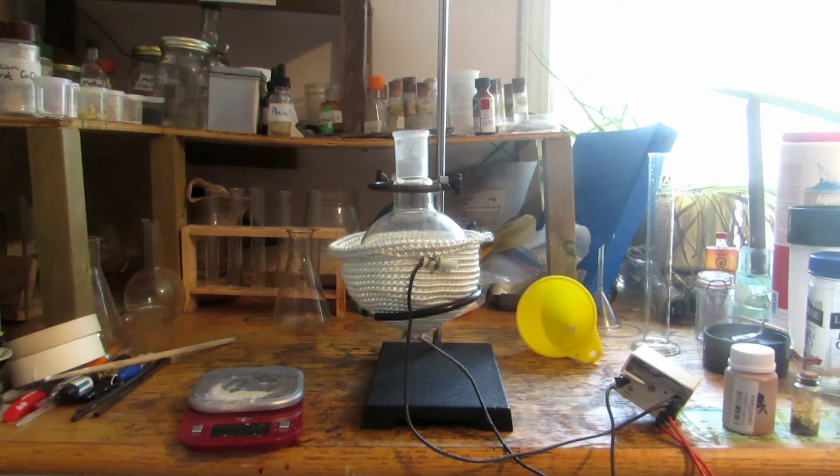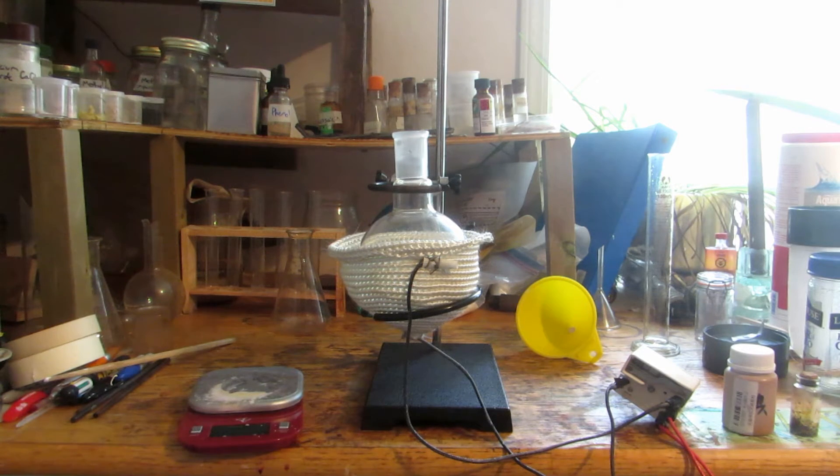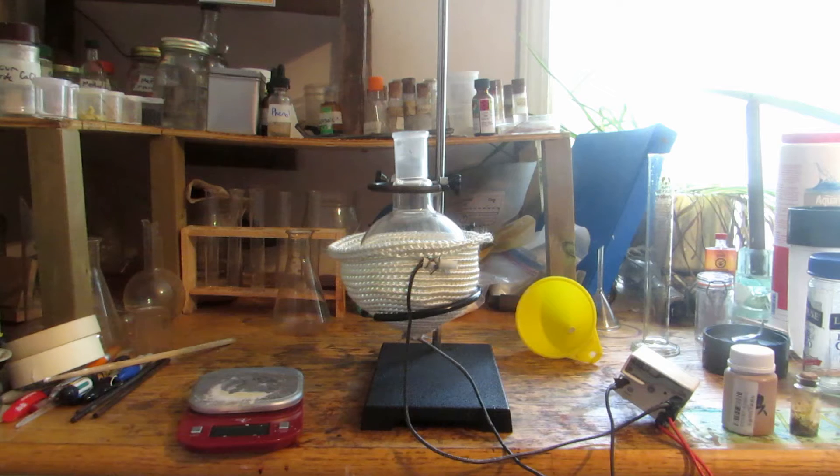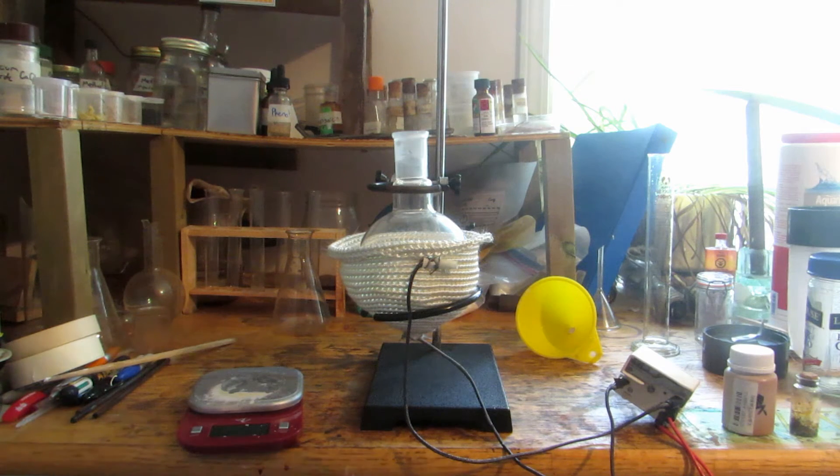When that's been added, the flask was swirled to dissolve it. Now I've turned on the heating mantle because we need to get this solution quite hot, probably around 70, 80 or 90 degrees Celsius for the reaction to occur.